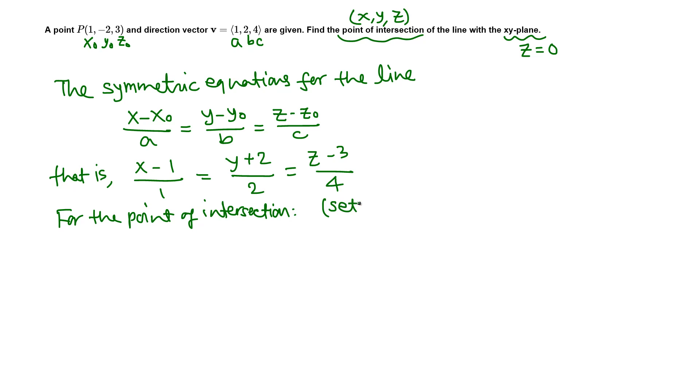All we have to do is set z equals 0 because xy-plane. That gives us x minus 1 over 1, means just x minus 1, equals y plus 2 all over 2 equals, plugging in 0 here, negative 3 over 4.